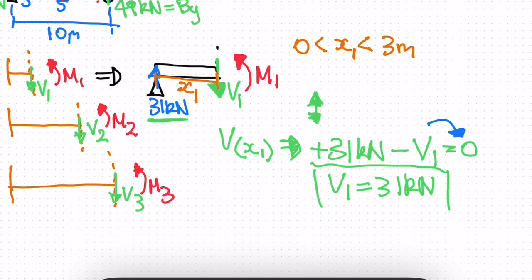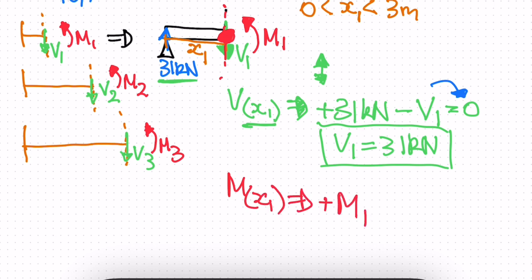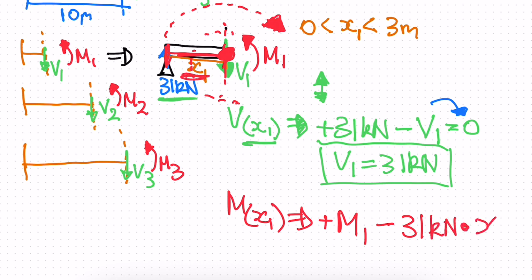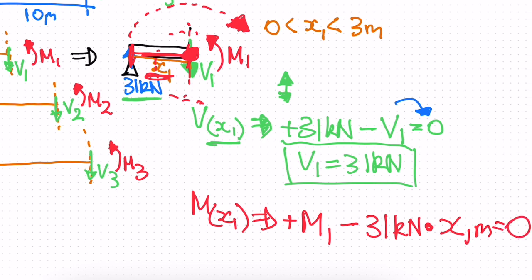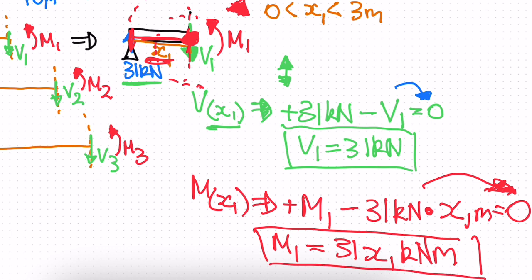We've found our shear function — at any distance x1, V1 = 31 kilonewtons. For the moment function M(x1), we take moments about the cut point. We have a positive M1 acting anti-clockwise, and the 31 kilonewtons force creates a negative moment at distance x1, giving: M1 minus 31·x1 = 0. Therefore M1 = 31·x1 kilonewton-meters. We've now found both the shear and moment functions for the first section.